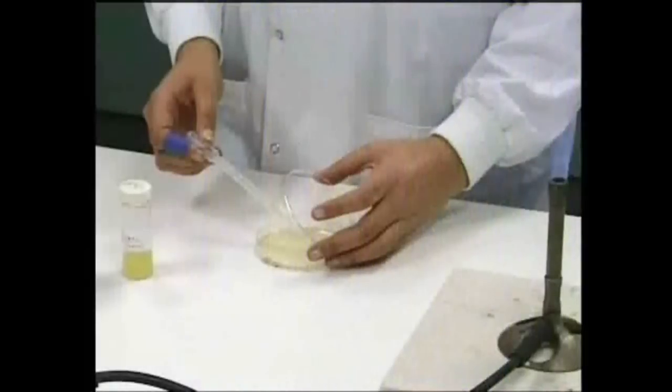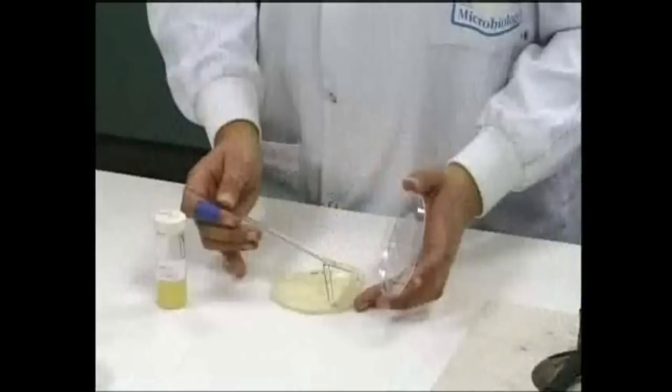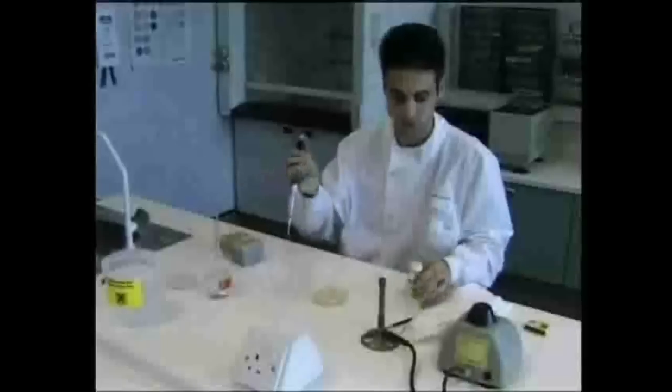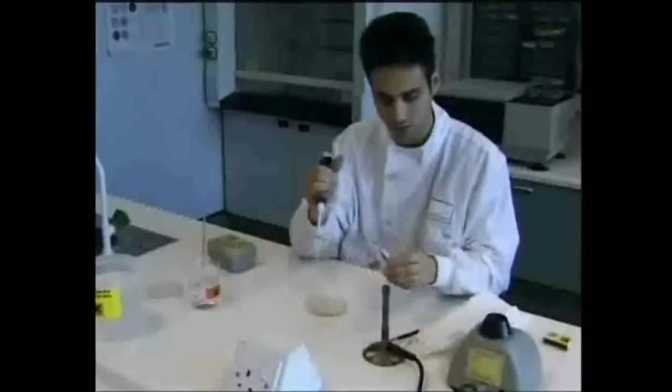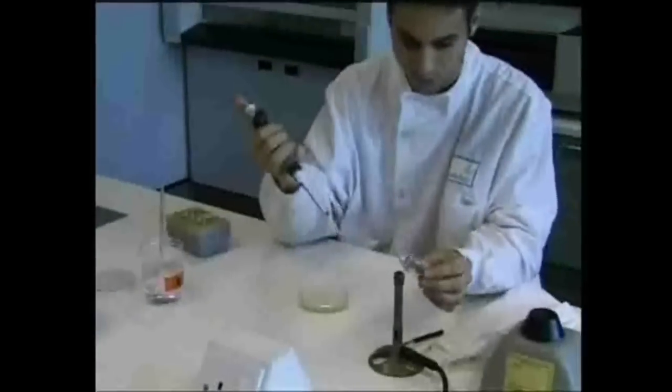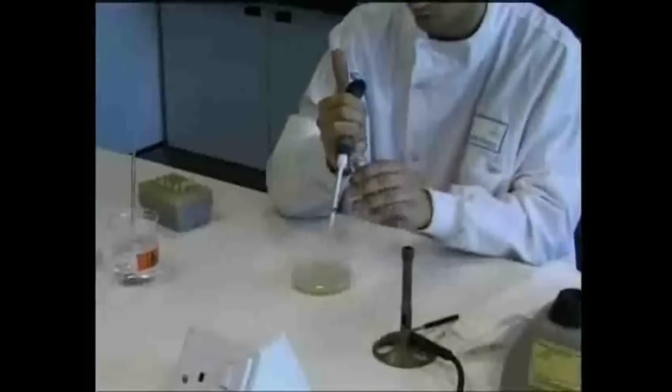A safer way to prepare a bacterial lawn is the spread plate method. This involves pipetting a smaller volume of bacterial culture, up to half a cubic centimeter, into the centre of an agar plate. The lid of the culture bottle is removed and the neck of the bottle is flamed. Using a sterile pipette, the required volume of the bacterial broth is removed.